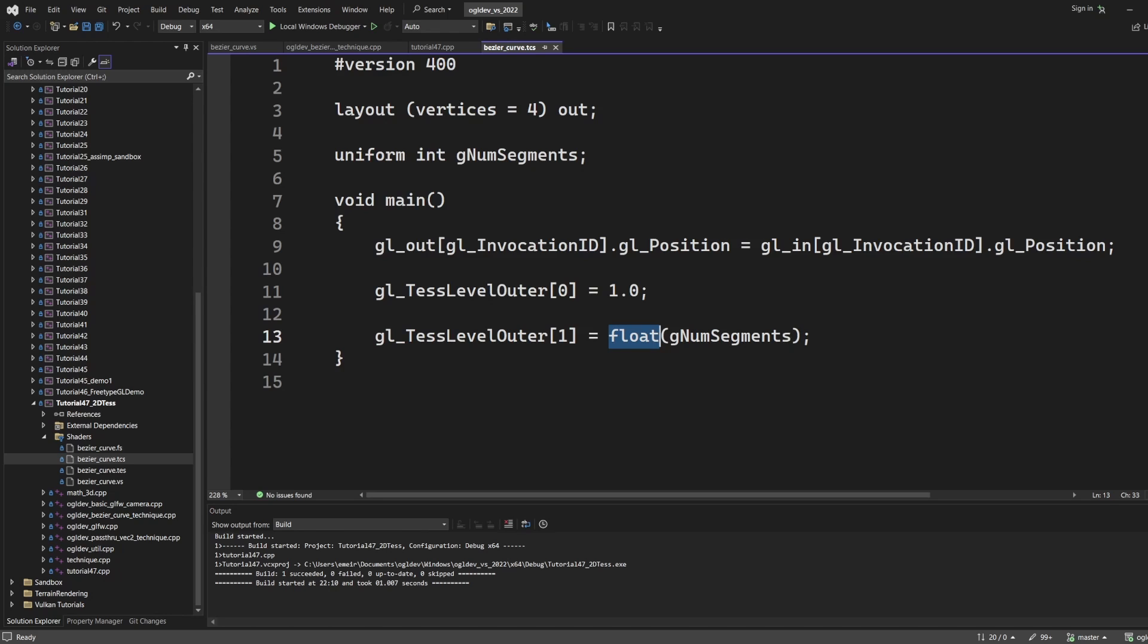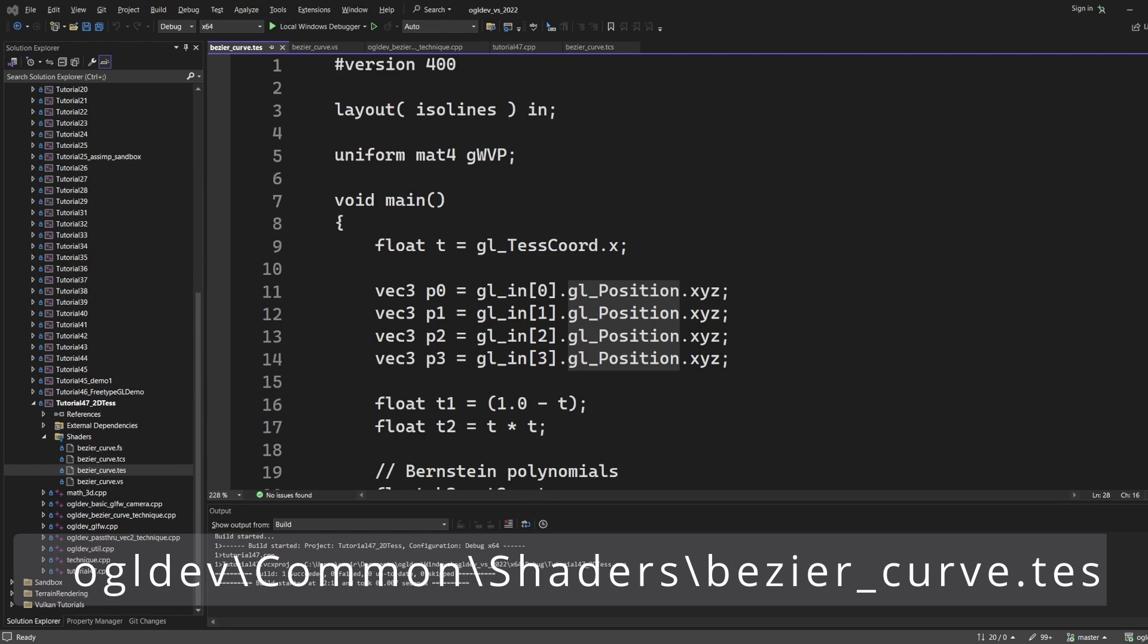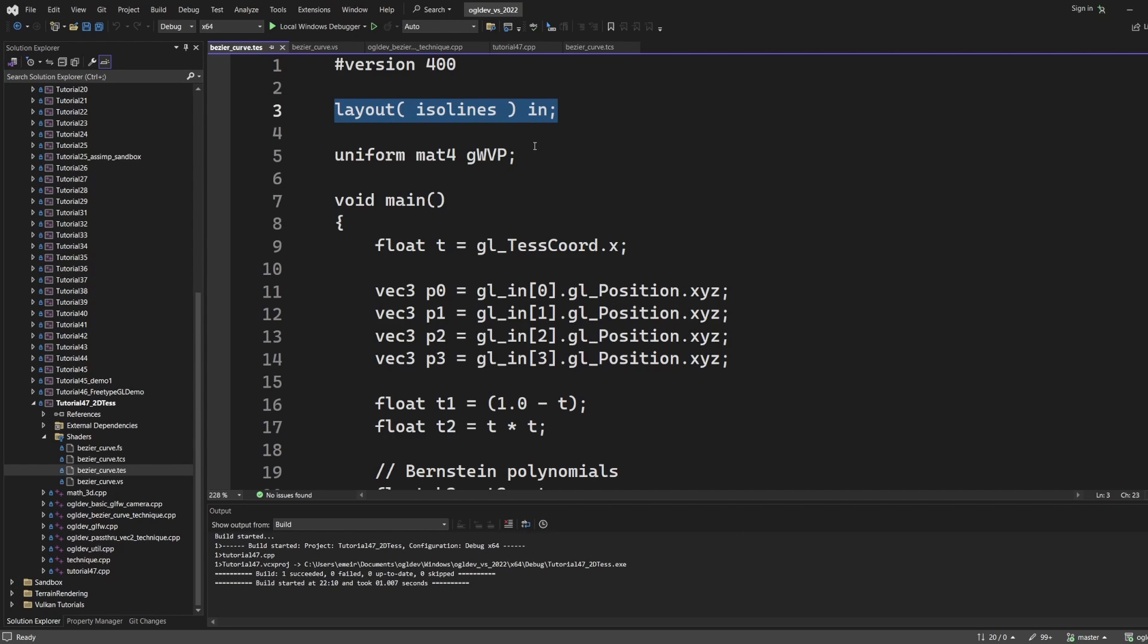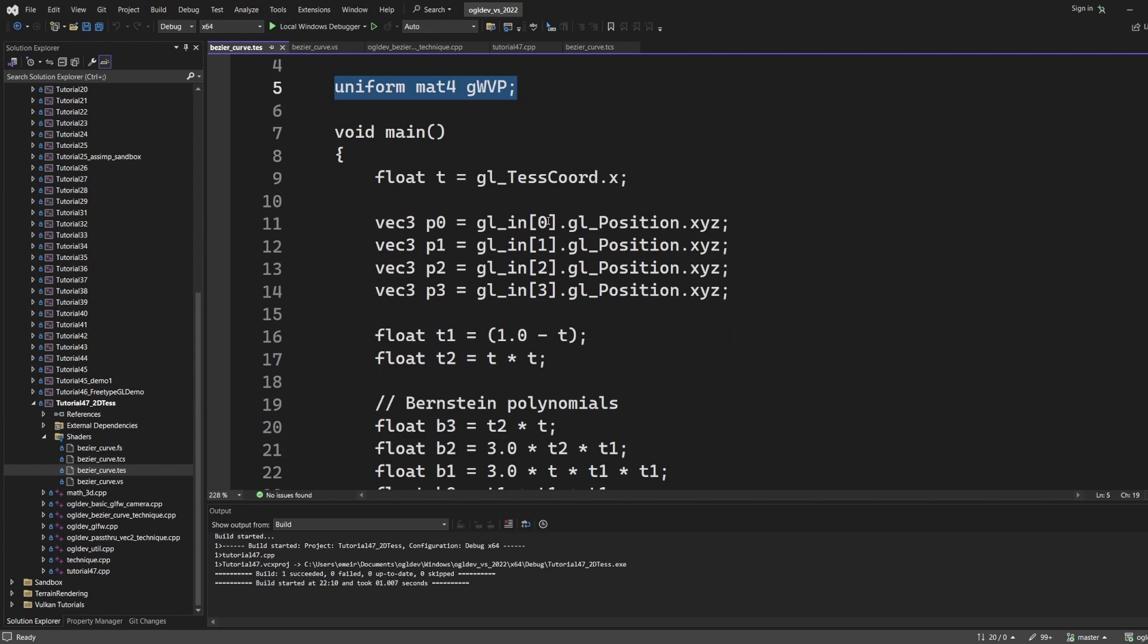Now you may be looking for a tessellator configuration to use the isolines algorithm but for some weird reason it is part of the evaluation shader so let's go there. And we can see the layout specifier up here. Perhaps the reason is that the TCS is optional and the OpenGL designers didn't want to have a default for something like the subdivision algorithm. Anyway we can see that the WVP matrix has been moved from the VS to the TES. Now let's see what this shader actually does.